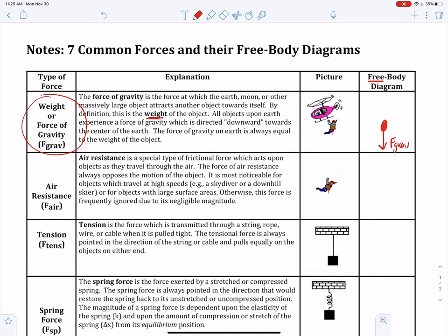Let's keep going. Let's add another force. Number two, air resistance. Let's take a look at air resistance. Air resistance is a special type of frictional force, which acts upon objects as they travel through the air. The force of air resistance always opposes the motion of the object. It is most noticeable for objects which travel at high speeds like a skydiver or a downhill skier or a car that's driving really fast, or for objects with large surface areas like a parachute or a flat piece of paper that's falling. Otherwise, this force is frequently ignored due to its negligible magnitude.